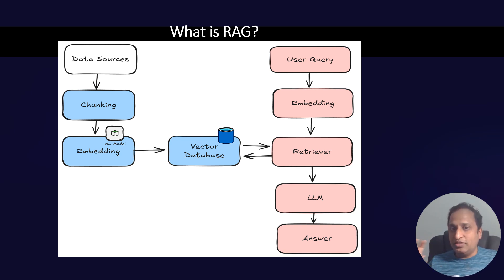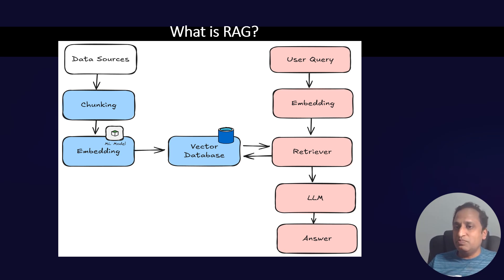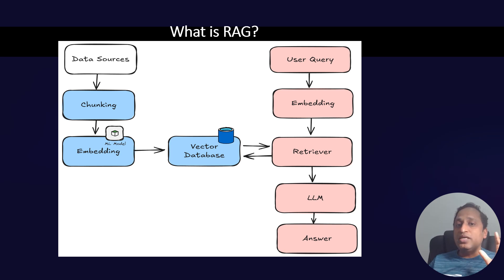The next step is embedding — each chunk is converted into a numerical vector representation, a process that captures semantic meaning rather than just keywords. Think of an embedding as a way to represent words or sentences as numbers so AI can understand and compare them efficiently. For example, words like apple, orange, and banana might be placed close together in a multi-dimensional space because they are all fruits, but a word like car would be placed farther away.